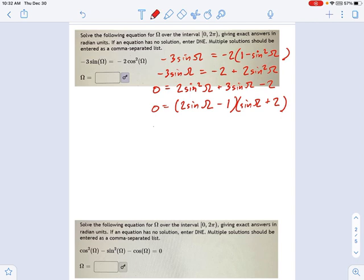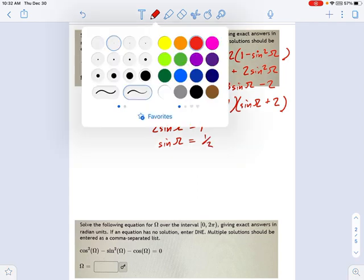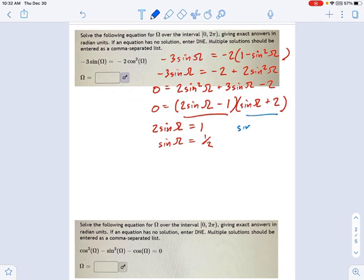And now my two solutions are getting towards that. 2 sine equals 1, so in other words sine omega equals 1 half. That's one of my solutions I got from this guy right here. And the other solution that I'm going to get over here is sine omega equals negative 2, and that's a D.N.E. right away. You can't have the sine of an angle being greater than 1 or less than negative 1.